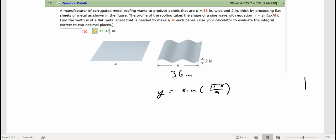And it wants to know what the width of that is, so the width of that metal would just be the arc length here, right. Okay, so I'm thinking about the arc length has to be equal to 36, so let's look at the derivatives.